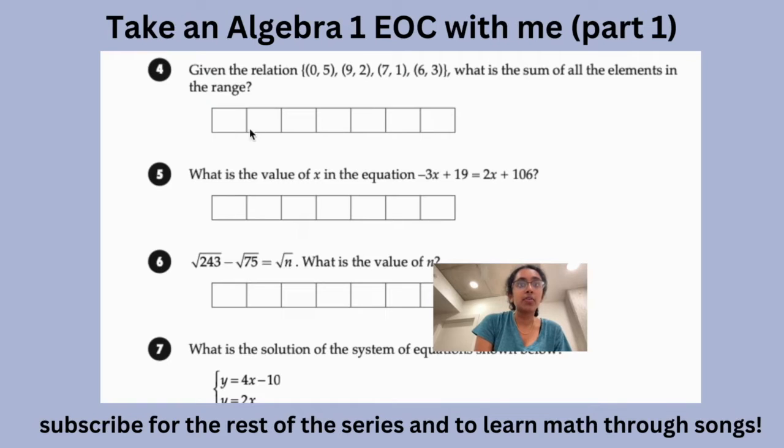So given the relation of these elements, what is the sum of all the elements in the range? So let's look back at our song called Domain and Range: Domain and Range, Domain and Range. Domain is all the X values and range is all the Ys. So the range is all the Y values here. So we have 5, 2, 7. 5 plus 2 is 7 plus 1 is 8 plus 3 is 11. So you would just put 11 here and that is our answer.